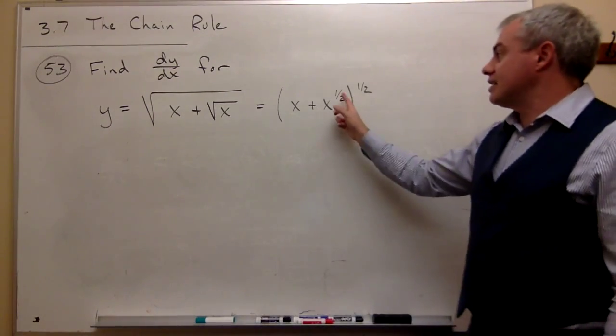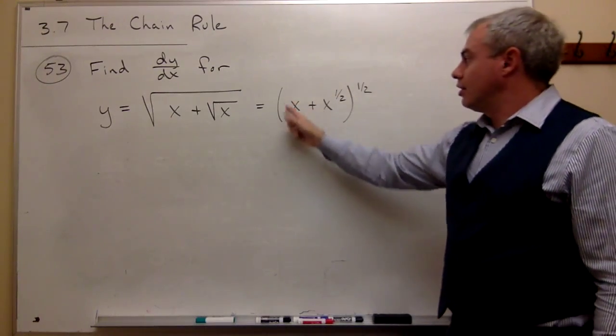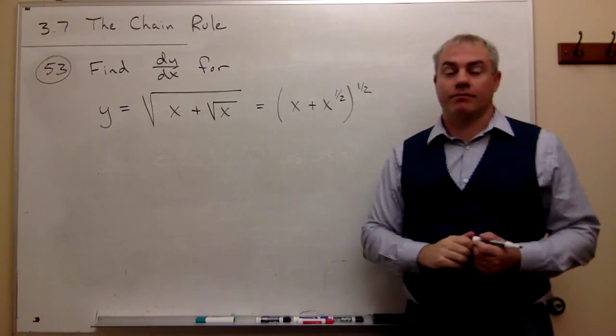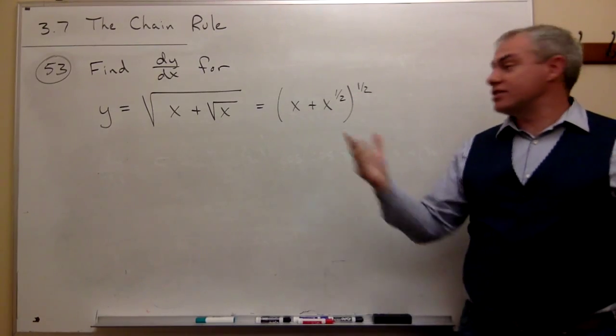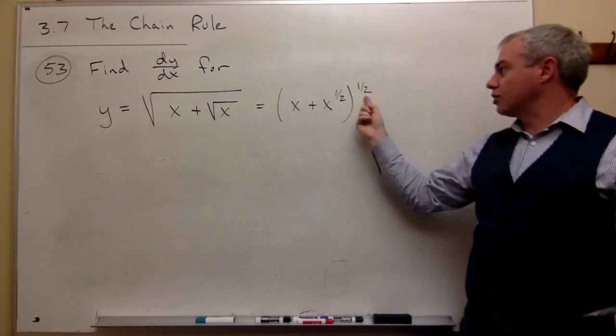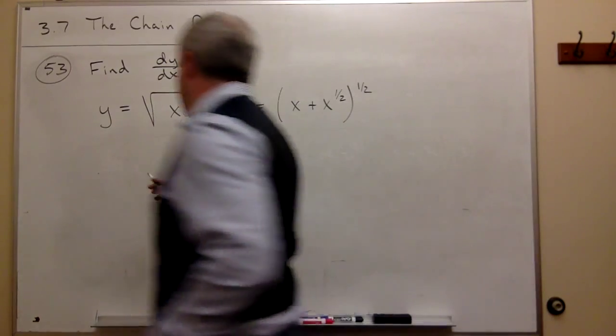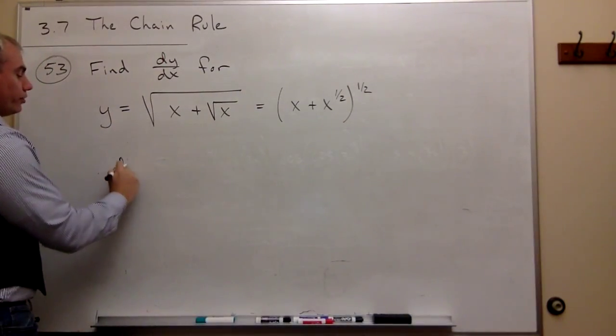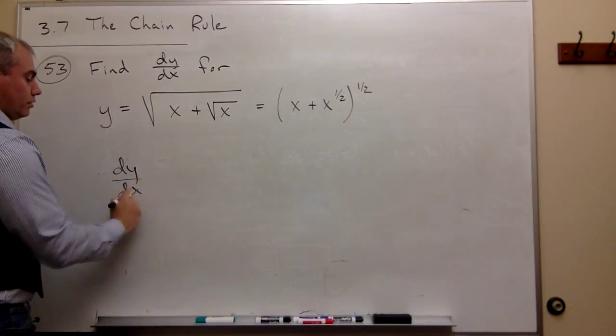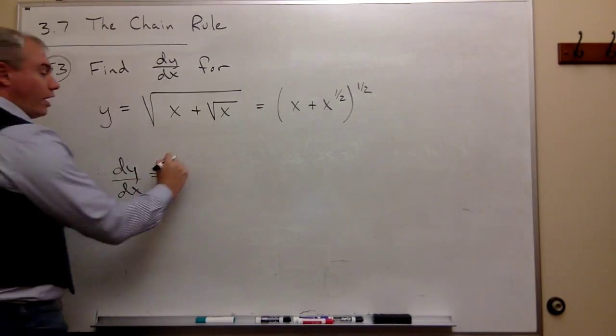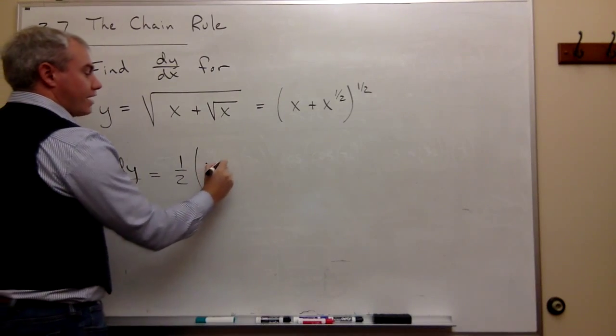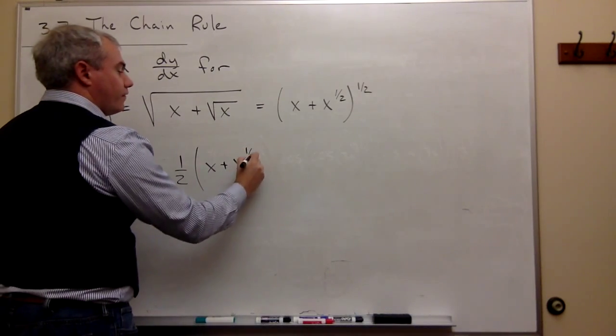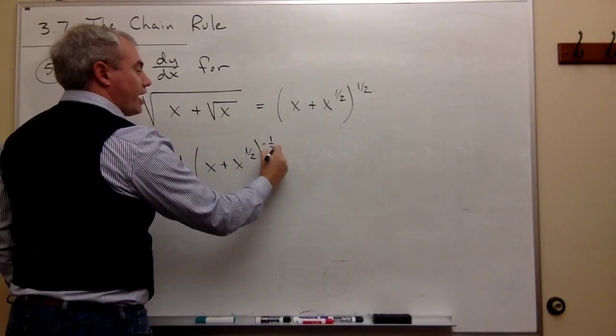So now that I see this, I see that I have something raised to the one half power. So I have something to the one half. And what's the derivative of something to the one half power? Well, we know from the power rule that that would be one half of that something, so whatever's on the inside, x plus x to the one half, raised to the negative one half,